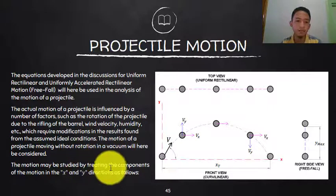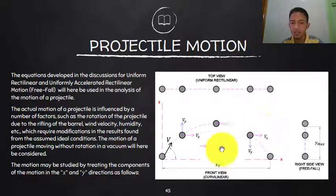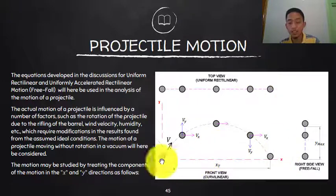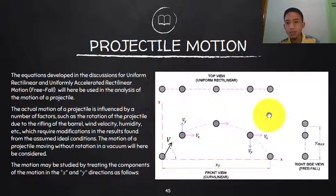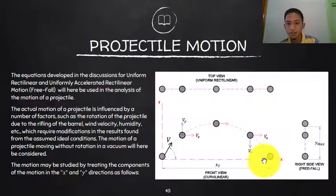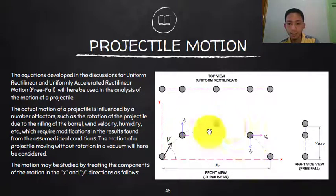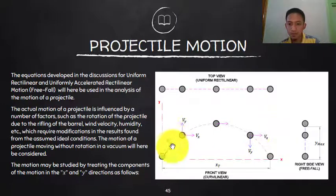The motion may be studied by treating the components in the x and y directions. In this simple projectile case, there is no applied horizontal acceleration, so that remains constant velocity. We deal with velocities in the horizontal and free fall in the vertical — uniform rectilinear and uniformly accelerated rectilinear motion.